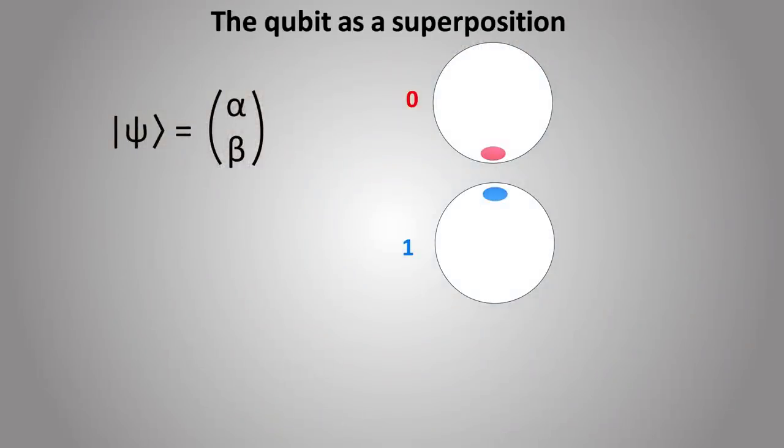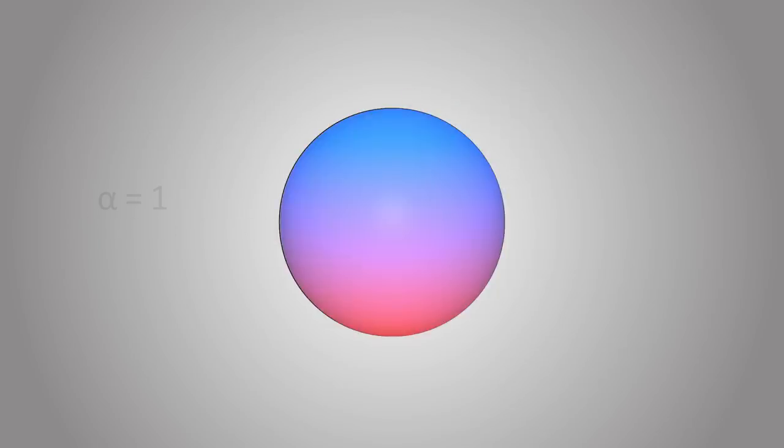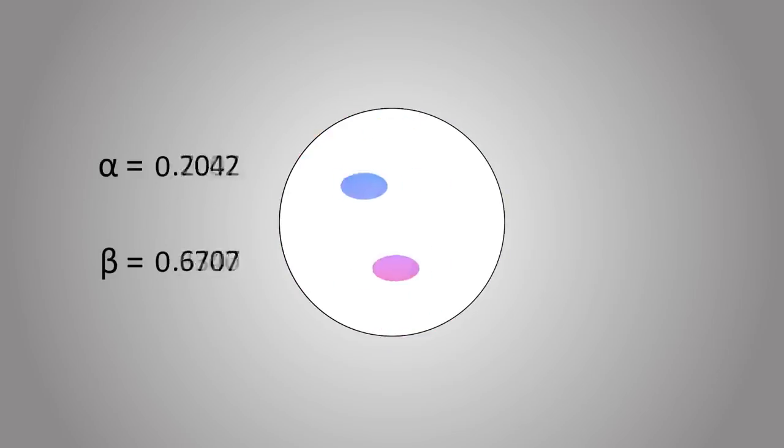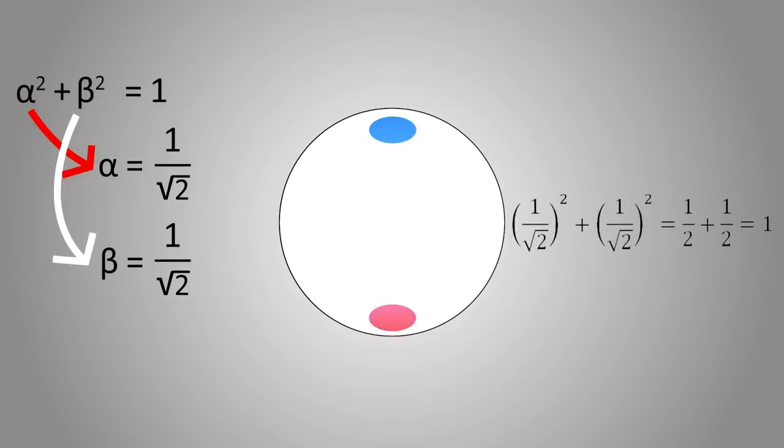Mathematically, we write the superposition as this, where psi represents the wave function, representing the superposition of a qubit. Alpha squared is the probability of being in the 0 state, and beta squared is the probability of being in the 1 state. And for the math to be consistent, we must have that alpha squared plus beta squared equals 1. This makes sense because the total probability must be 1, or 100%. Thus, if we choose alpha to be 1, then beta must be 0, and vice versa. However, in a quantum computer, these alpha and beta values can be any value between 0 and 1, as long as the equation is satisfied. For example, we could have a mixture where alpha and beta are each 1 over the square root of 2.